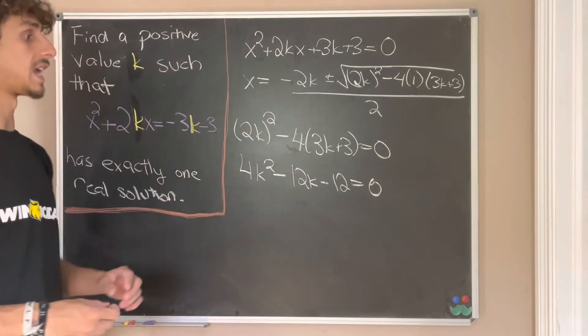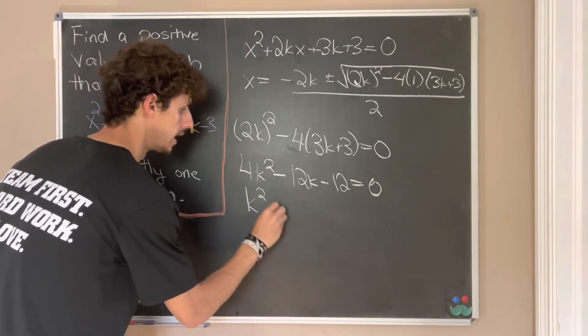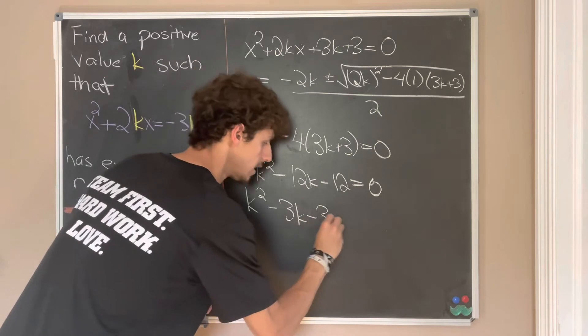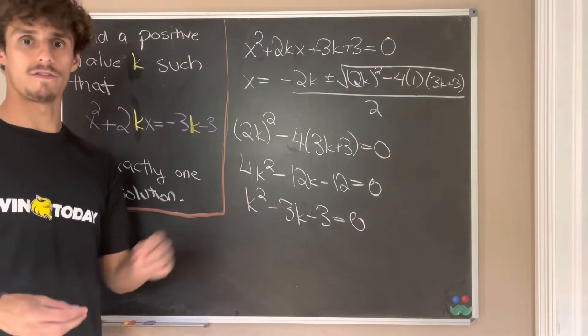But now because all of these terms have a 4 in them, we can factor that out and divide. So we'll have k squared minus 3k minus 3 is equal to zero. That's just by factoring out a 4 and then dividing.